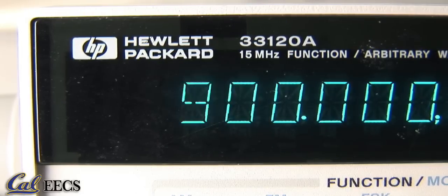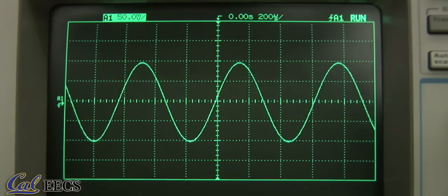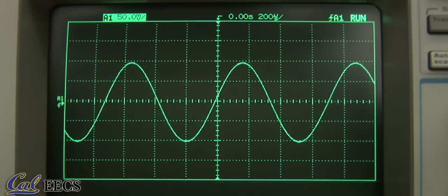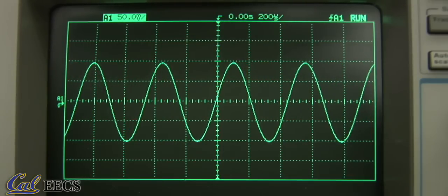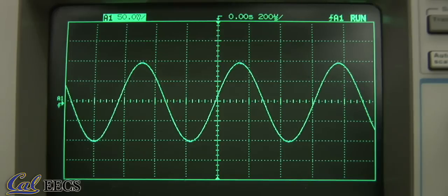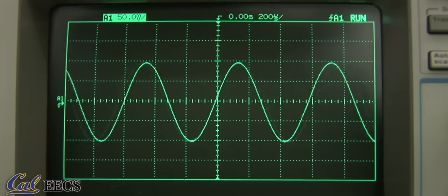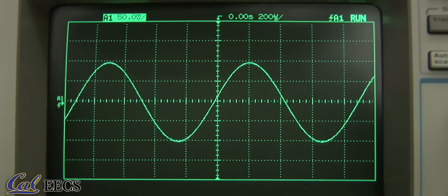You can see on the oscilloscope what changing the frequency does to the waveform. Raising the frequency makes it repeat faster and lowering the frequency slows it down. The maximum frequency for this machine is 15 megahertz.